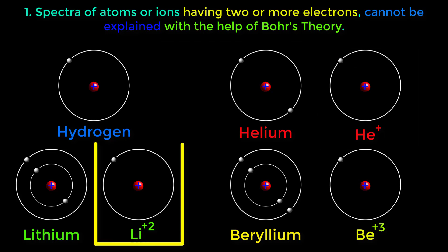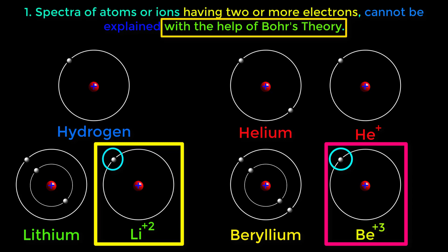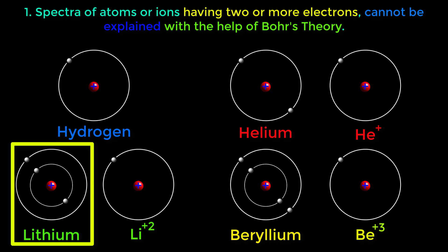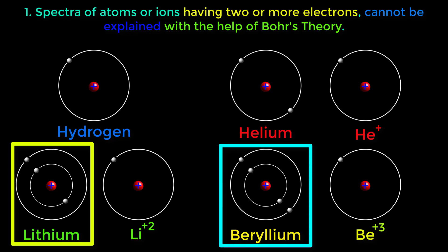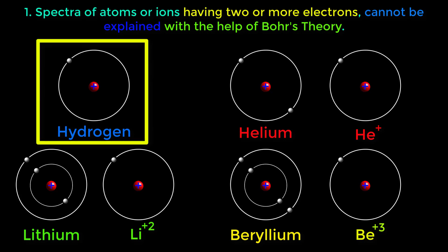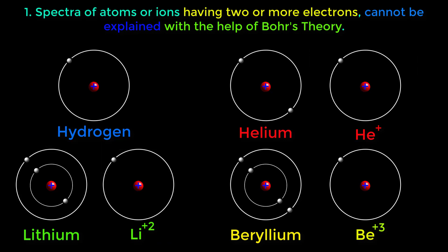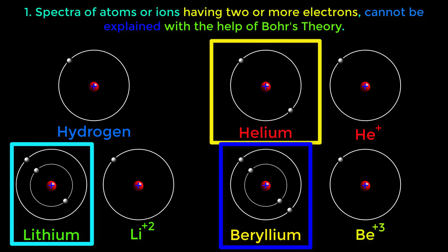Similarly, these lithium ions and beryllium ions can be explained with Bohr's theory as both of them have only one electron around their nucleus. But lithium atom and beryllium atom cannot be explained with Bohr's theory as they have more than one electron. That means Bohr's theory is only applicable for mono-electron systems like hydrogen atom, helium+ ion, lithium 2+ ions, etc., but it is not applicable for poly-electron systems.